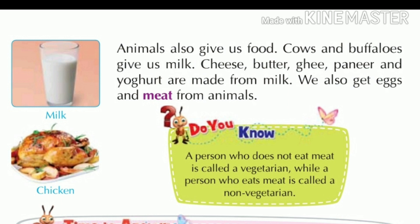Animals also provide food. Cows and buffaloes give us milk. Cheese, butter, ghee, paneer, and yogurt are made from milk. We also get eggs and meat from animals.